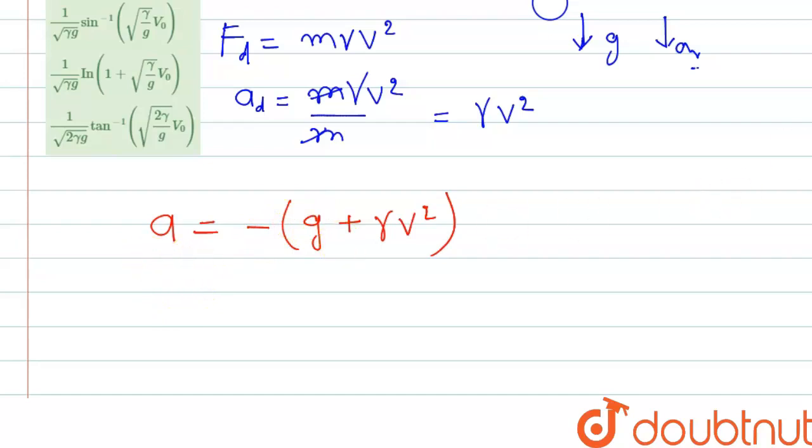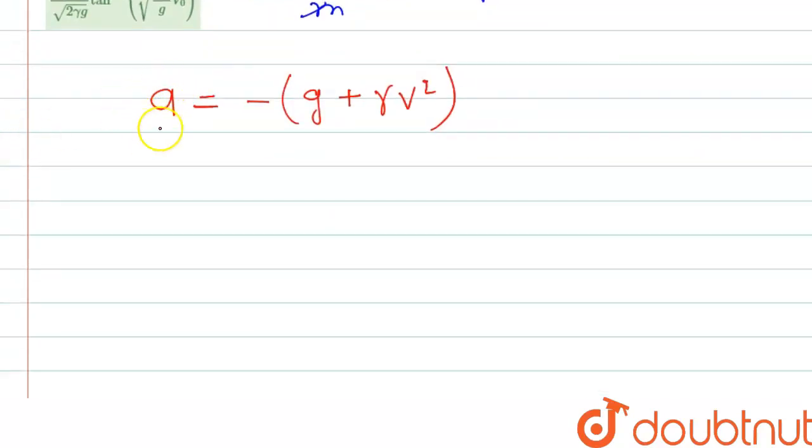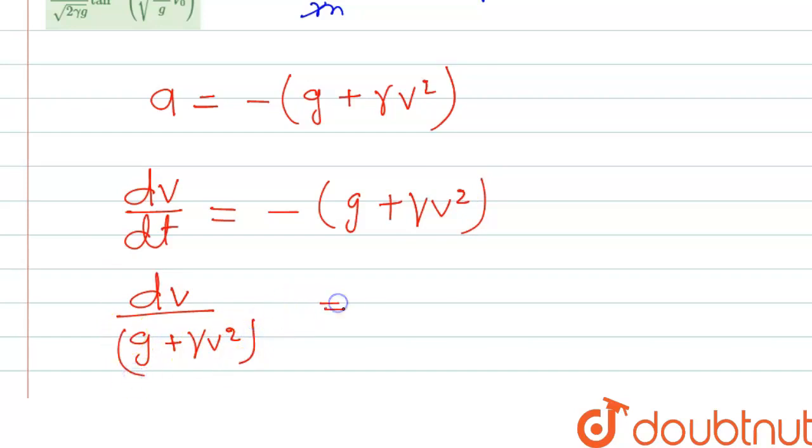Now to calculate time, what we can do is we can write the expression in terms of velocity. So this will be in differential form dv by dt. Here we have t and if we integrate dt then we will get the t. Here we can write minus g plus gamma v square. Now if we take the v square to this side, this will be dv by g plus gamma v square, and this side minus dt.